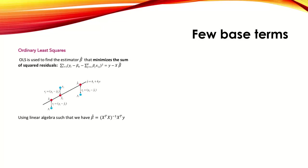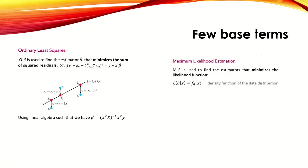A few more terms: OLS stands for Ordinary Least Squares, used in regression models. We draw the model learning line, find the error with respect to the input data, square those errors, and find the ordinary least square. For classification, we use Maximum Likelihood Estimation, which finds the estimators that minimize the loss.